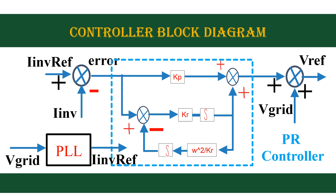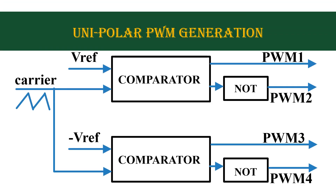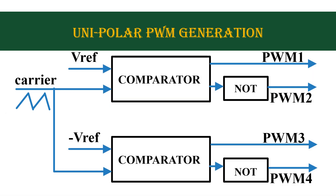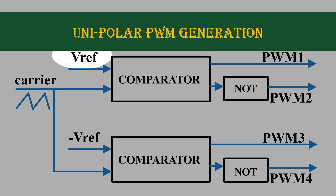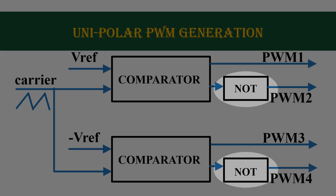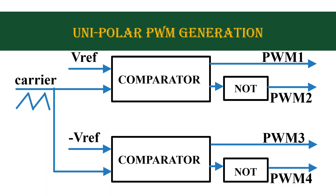This is the PWM generation block. We are using unipolar PWM generation scheme. Here the reference voltage is compared with a triangular carrier wave. Since we are using unipolar PWM, positive and negative references are compared. Output of each comparator is inverted and then connected to the gate terminal of each IGBT.